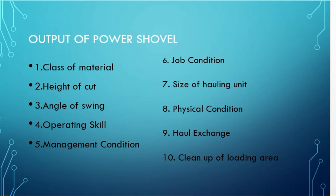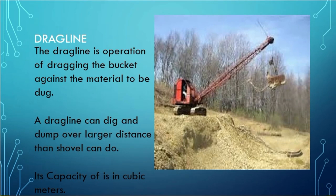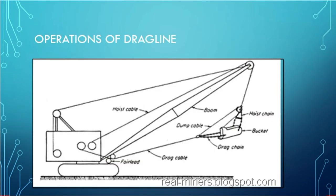Now we can go to the drag line. Here in the picture you can see the drag line. It has a large boom with a bucket, and this bucket can reach a large depth — larger than the power shovel. The drag line consists of a boom, bucket, cable, and cabin.